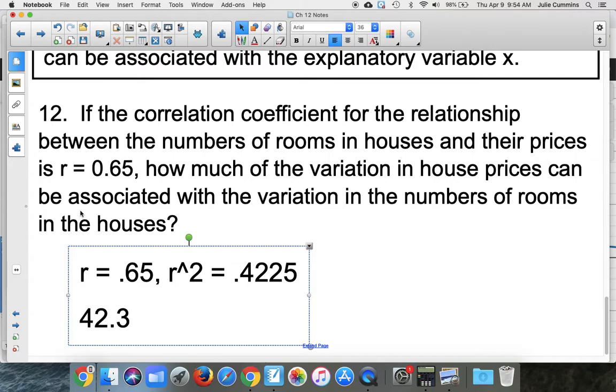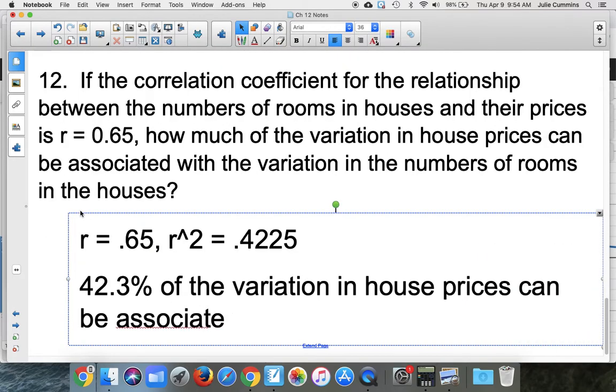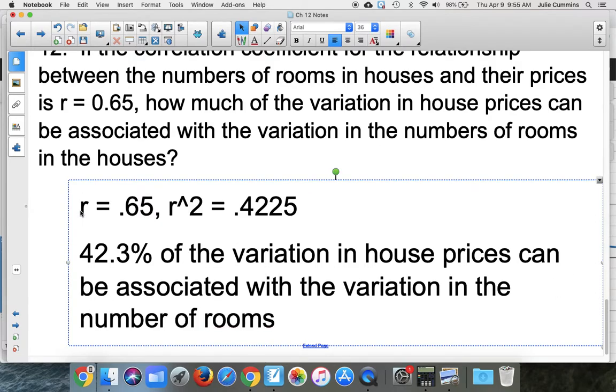So that means 42.3% of the variation in house prices can be associated with the variation in the number of rooms in the house.